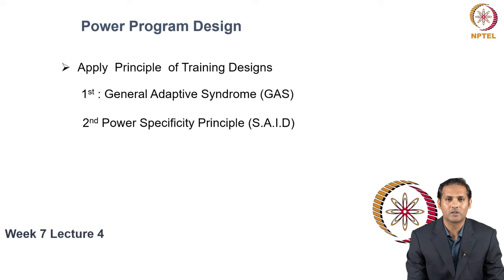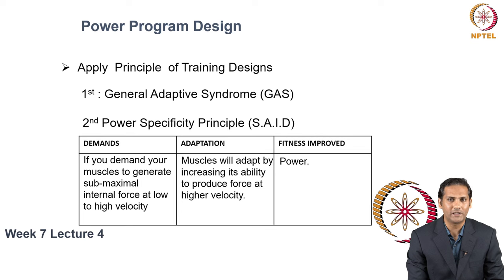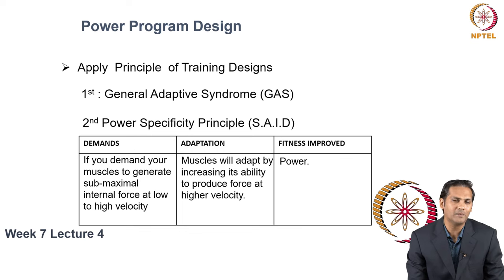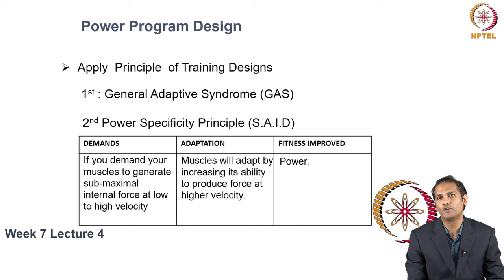The second concept to apply in program design is the principle of specificity, relating to power fitness. The demand you give to improve power fitness is to demand your muscles to generate submaximal internal force at low to high velocity. This demand is provided through ballistic, semi-ballistic, light ballistic, and heavy ballistic exercises. Against this demand, your muscles adapt by increasing their ability to produce force at higher velocity, which ultimately improves your power capacity.